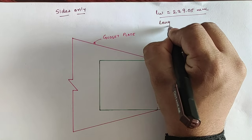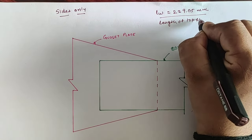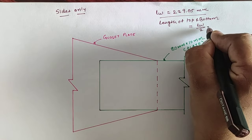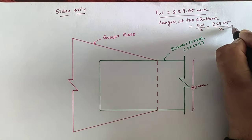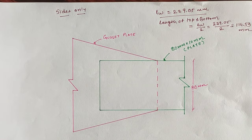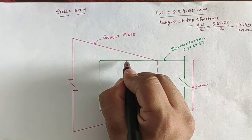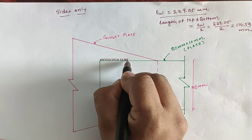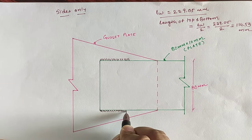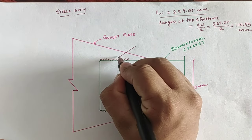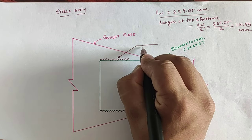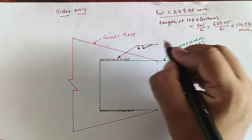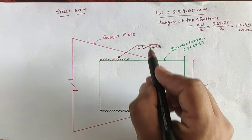Since we have to provide the length of weld 229.05mm at top and bottom only, the required length at top and bottom can be calculated by taking half of the total length required. Hence the total required length is 114.53mm at top and bottom. According to the weld notation, the weld thickness is 6mm and the total length is 114.53mm at top and also at the bottom.